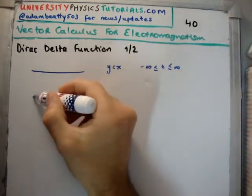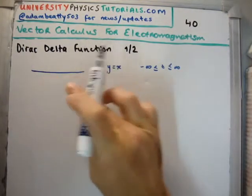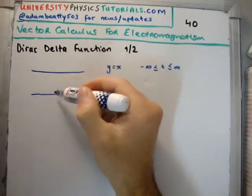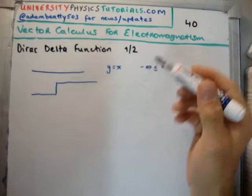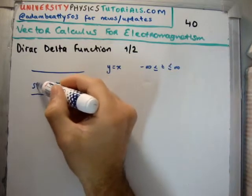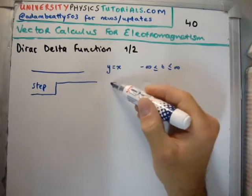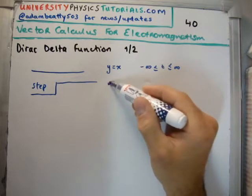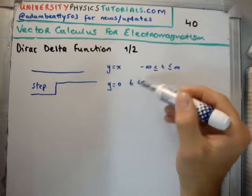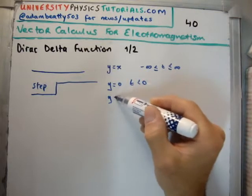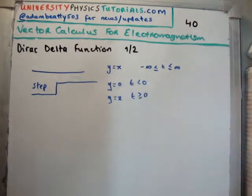I'm sure at some stage you might have seen a step function as well. A step function is something which is off for lots of time, then suddenly turns on and then it's on for the rest of time. We define this as a step for obvious reasons. We say y is equal to zero for t less than zero, but y is equal to x for t greater than or equal to zero. Simple.